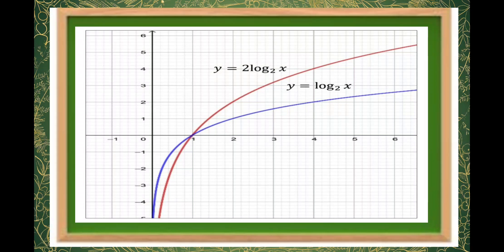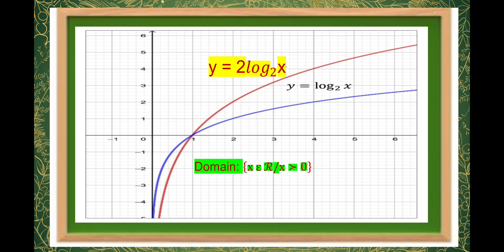We now have the graph for y is equal to 2 log of x to the base of 2, where the domain is x is an element of real numbers and x is greater than 0, and the range is y is an element of real numbers. You can also observe that compared to y is equal to log of x to the base of 2, the graph is stretched vertically by a factor of 2.